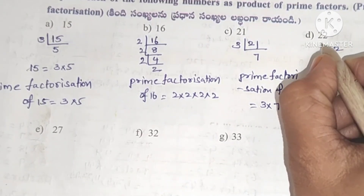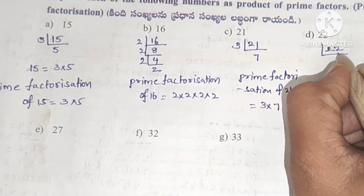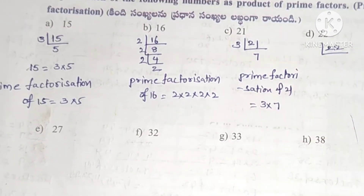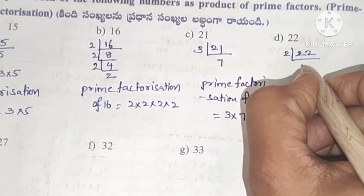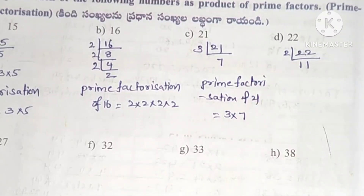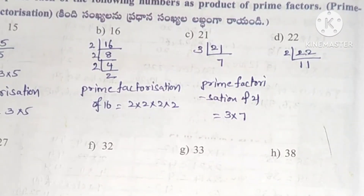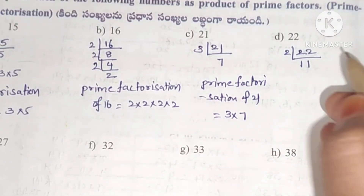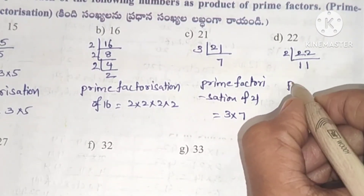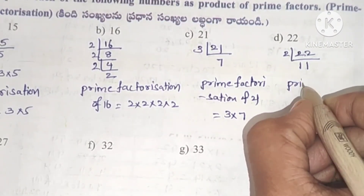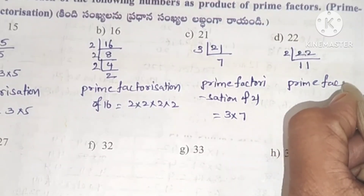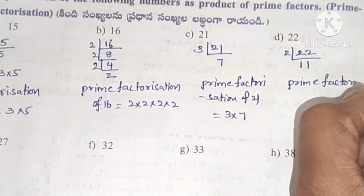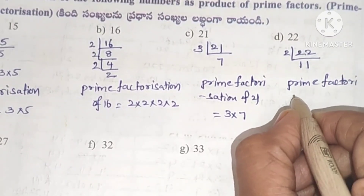Next, 22. Units place is 2, so the first prime number 2 divides it: 2 elevens are 22. Since 11 is a prime number, we can stop. Prime factorization of 22 is 2 into 11.